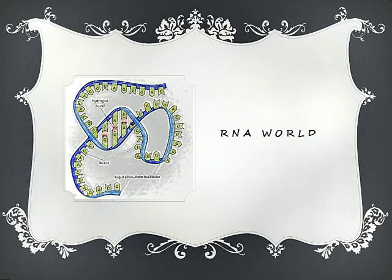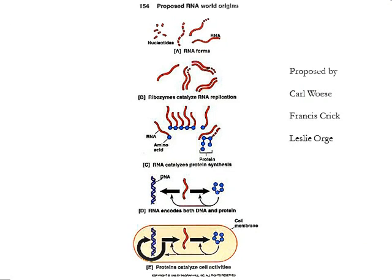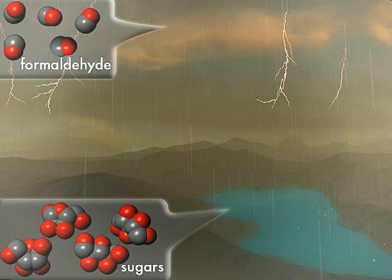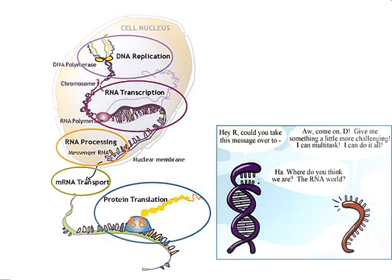Prominence on RNA analysis started after the RNA world hypothesis came into light, which was proposed by three scientists. They stated earlier forms of life may have solely relied on RNA to store and catalyze reactions, but due to its instability, RNA became increasingly phased out. From fossil evidence, life must have evolved sometime during Earth's tumultuous first billion years.